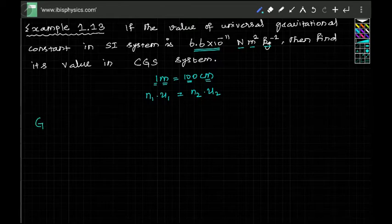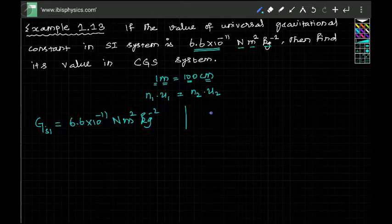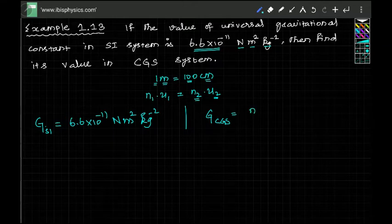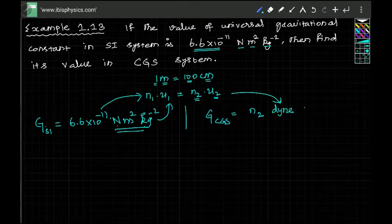The gravitational constant in the SI system is 6.6×10⁻¹¹ N·m²/kg². In the CGS system, the value is N2 and the unit is U2, which we need to find. The equivalent CGS units are: Newton → dyne, meter² → centimeter², and kilogram⁻² → gram⁻².